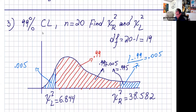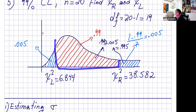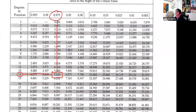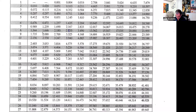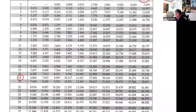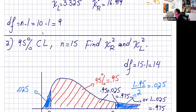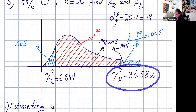Let's do the last one: 99% confidence level, n is 20. Right away we know the degrees of freedom are 19. This area is 99%, so the area in the tail is one minus 0.99 divided by two, which is 0.005. So: 0.005, degrees of freedom 19. The number is 38.582. Let's double check our answer — 38.582.